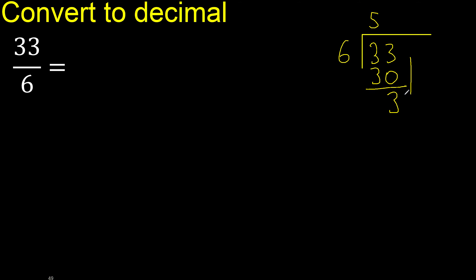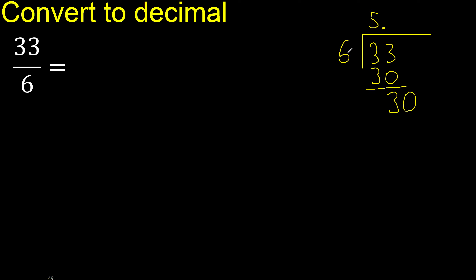There is no next digit, therefore complete. Always complete with 0 — here with a decimal point. 0 point. 30: 6 multiplied by 5 is 30. 30 minus 30 is 0. Therefore finish.